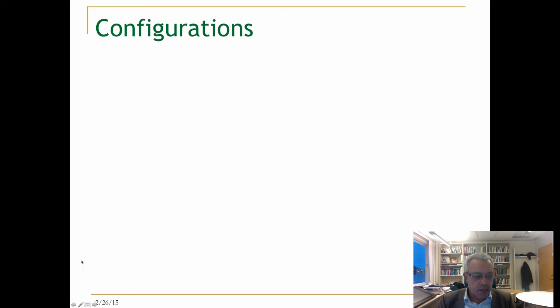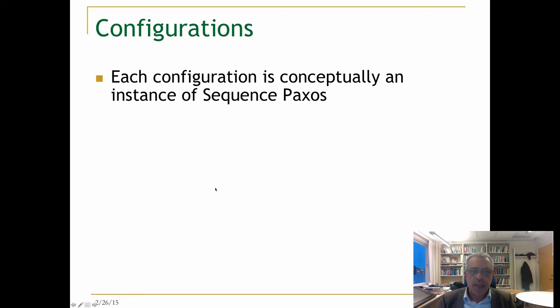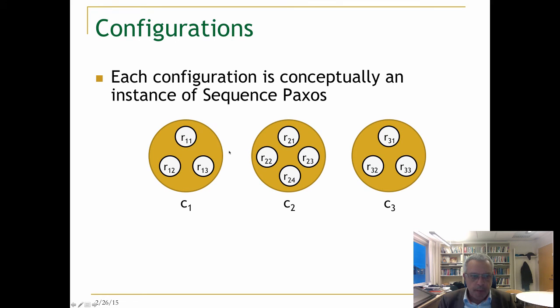Let us talk about configurations now. Each configuration is basically just an instance of sequence Paxos, so it is a set of processes together implementing a replicated state machine. Here is a typical configuration consisting of three replicas r11 to r13, and this is another configuration consisting of four replicas, and this is a third configuration.